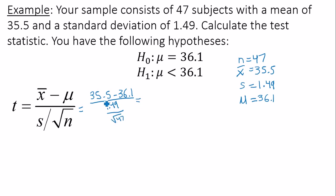35.5 minus 36.1 is negative 0.6. In the denominator down here, you have another fraction. You have 1.49 divided by square root of 47. And you want to keep this answer to as many decimal places as possible. So I will do 0.2173388. The more decimal places you keep, the more accurate your answer will be.